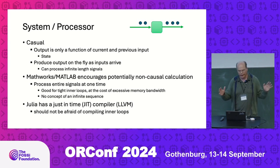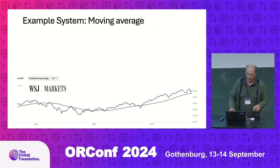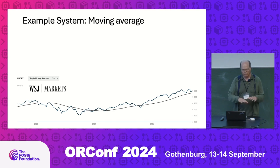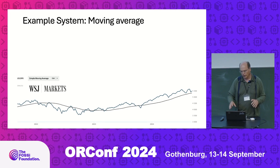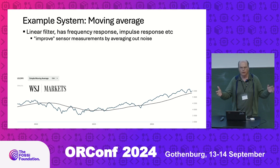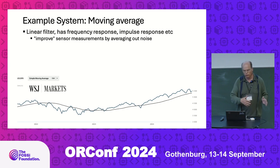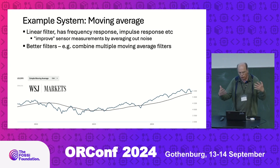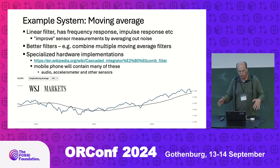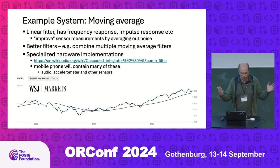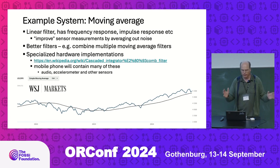The example I'll use is a moving average filter — the same concept as a moving average of a stock market index giving a smoothed version of the index. It's a moving average which is actually a linear filter with a frequency response and impulse response, the same thing you'd use to improve sensor measurements by averaging out noise. It's fairly standard to combine multiple moving average filters — this is a standard technique called a CIC filter. Your cell phone, for example, contains many of these: audio channels, accelerometer channels, and other sensors will probably all contain CIC filters.